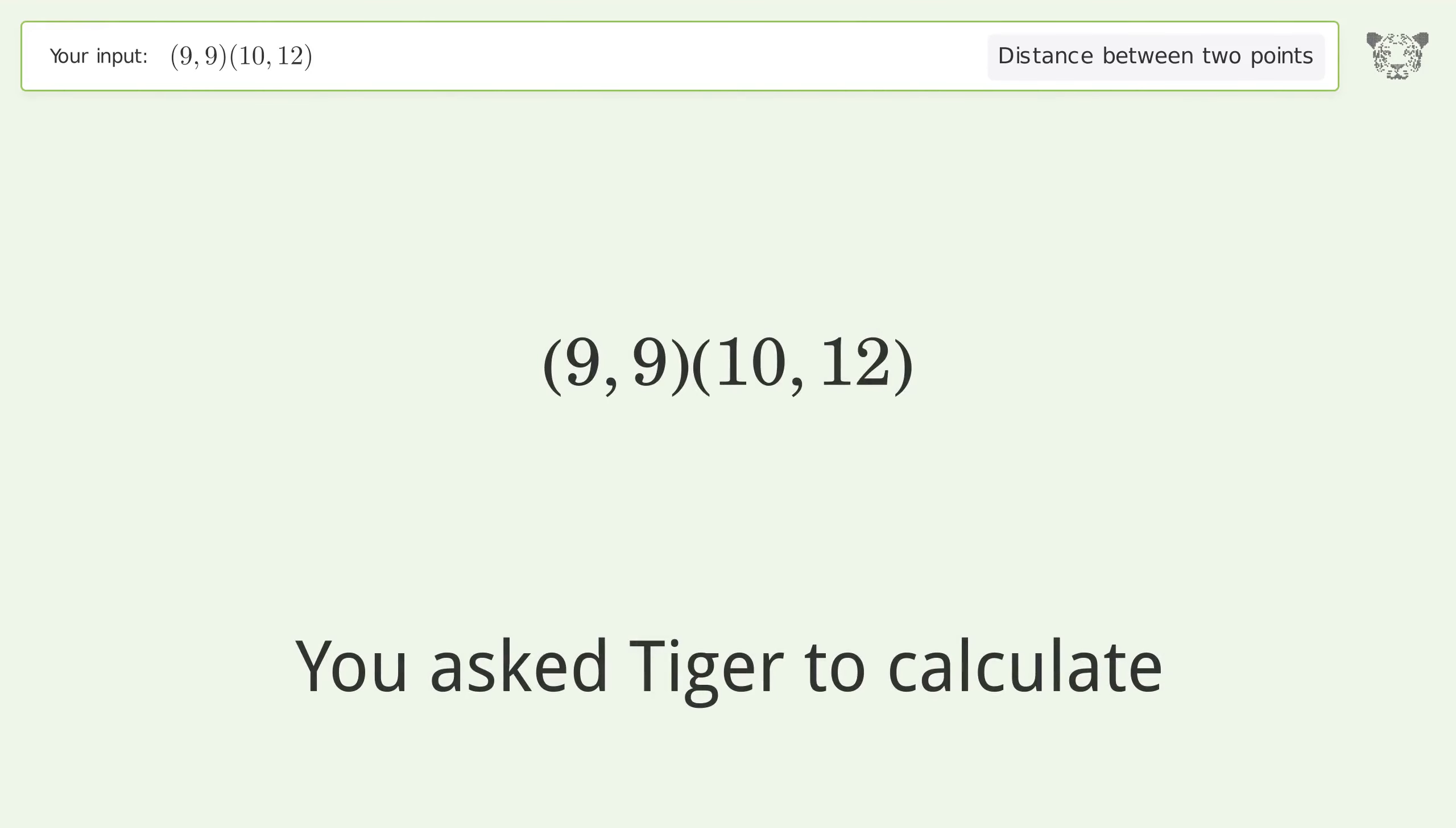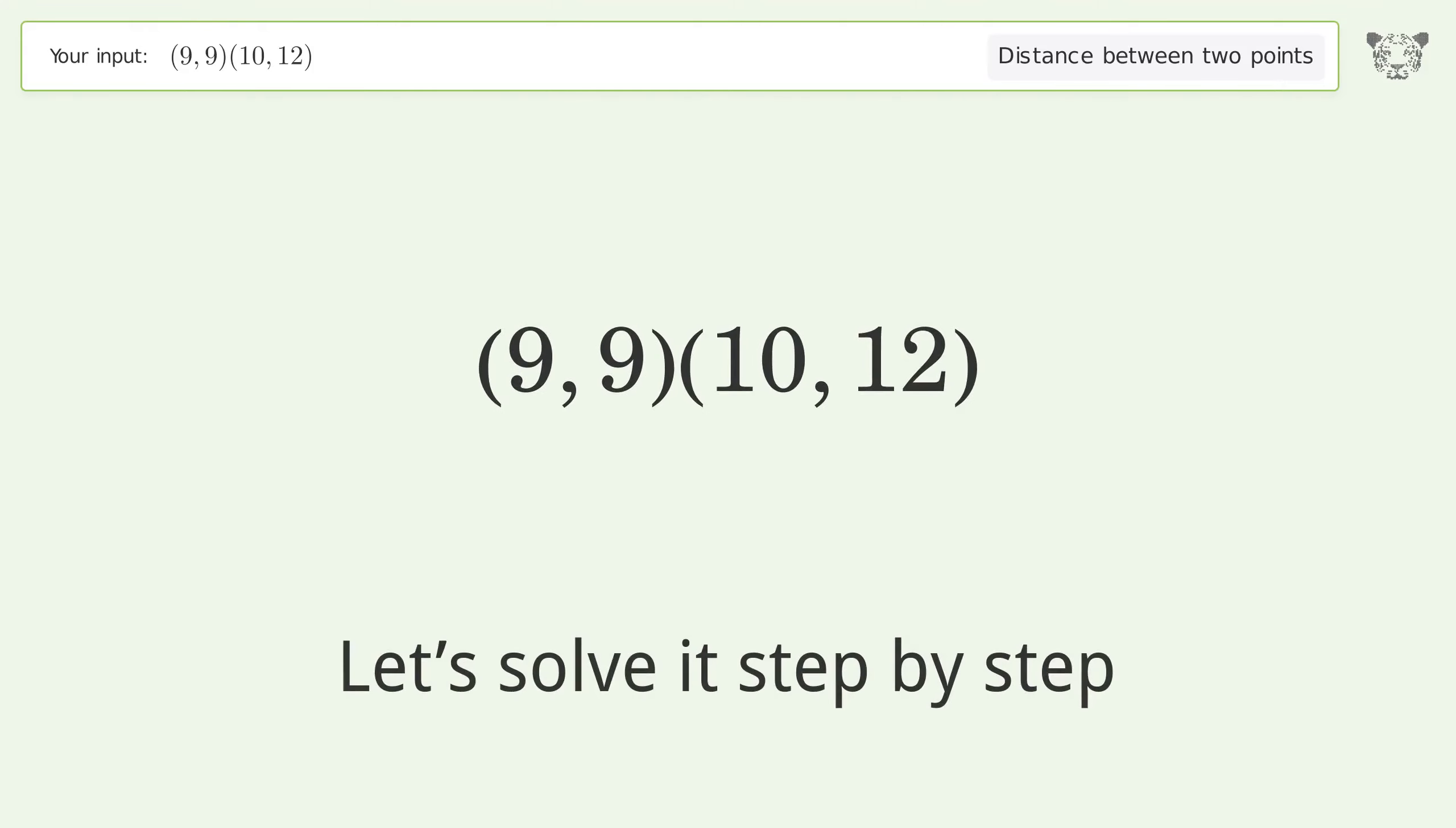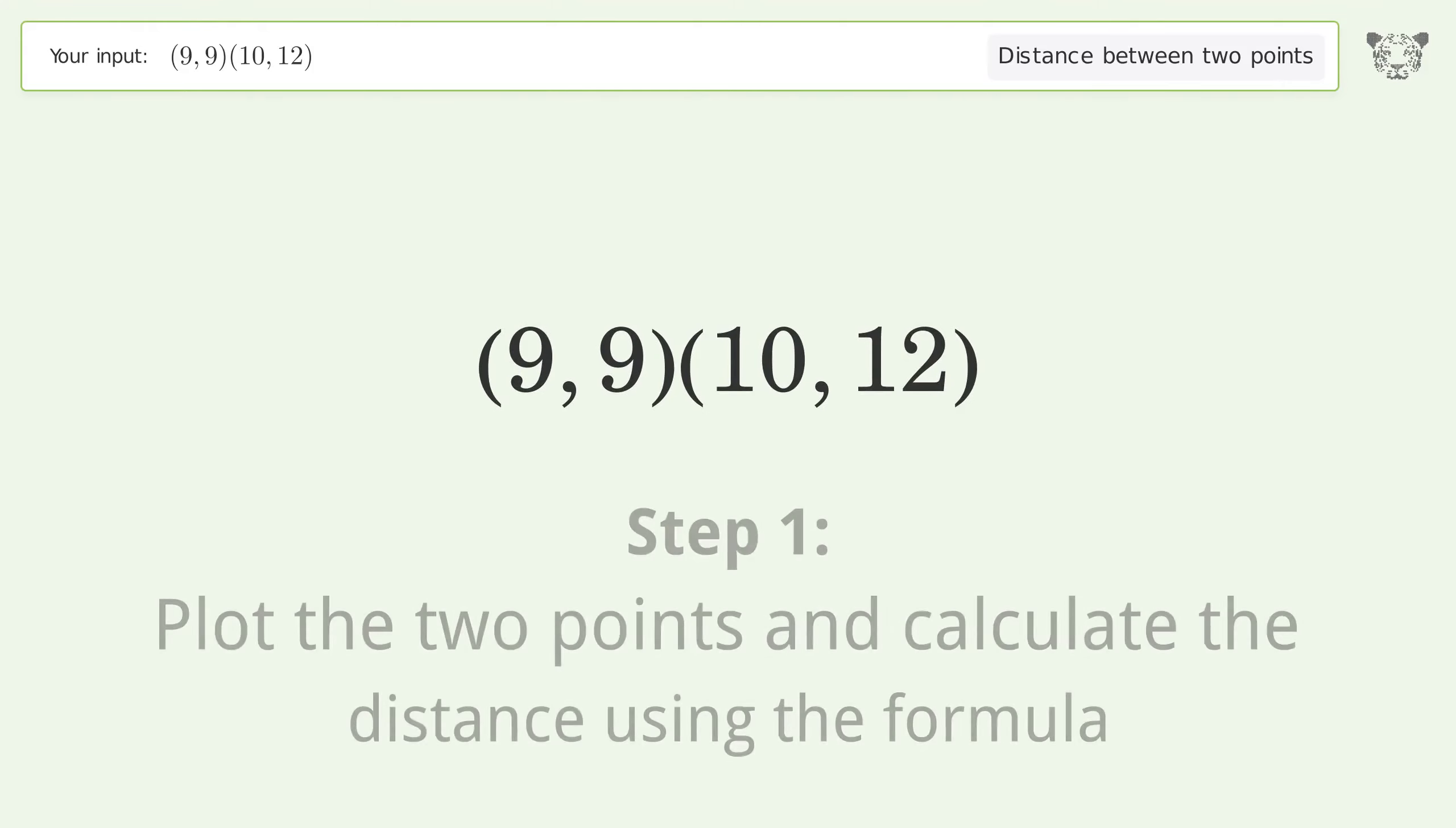You asked Tiger to calculate the distance between two points. The distance between the two points is the square root of 10 or 3.162. Let's solve it step by step. Plot the two points and calculate the distance using the formula.